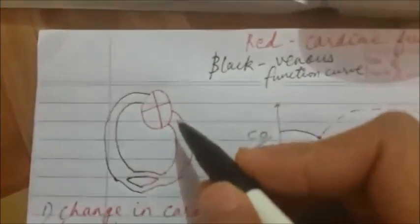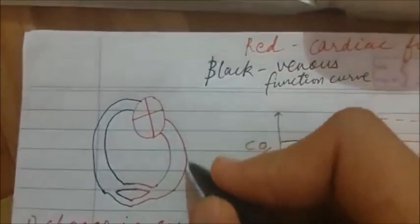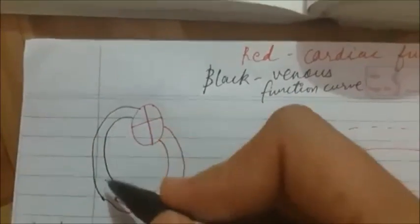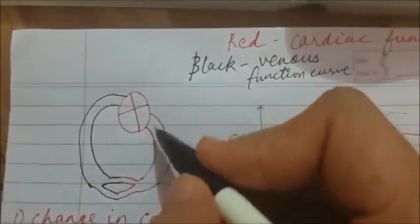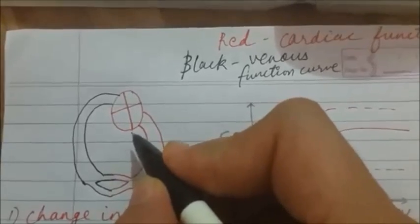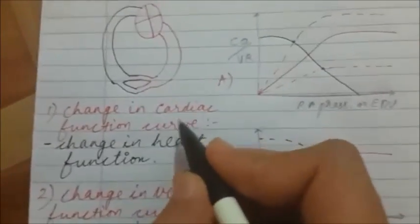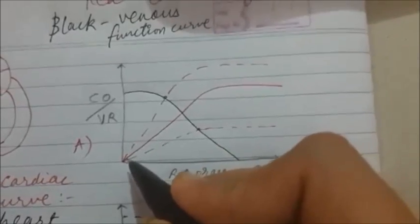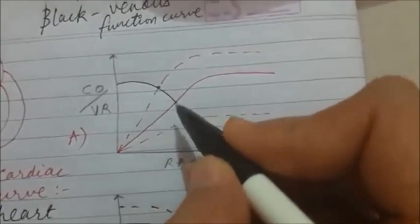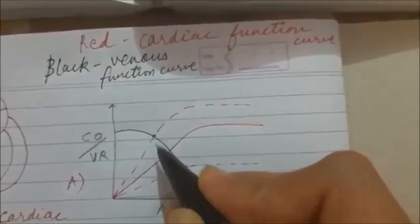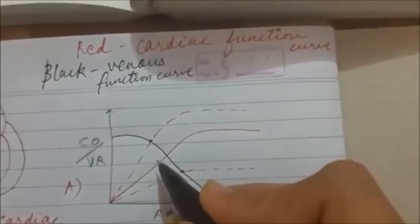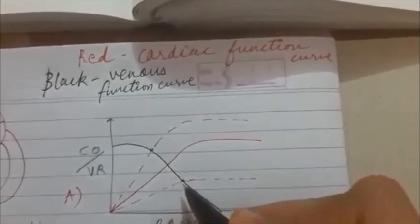This is our basic circulatory system. It consists of the heart — the red side is the arterial side and the black side is the venous side. Whenever there is any change in the function of the heart, like positive inotropy or negative inotropy, it will cause a change in the cardiac function curve. If there is positive inotropy, the cardiac function curve moves to the left; if there is negative inotropy, it moves to the right.